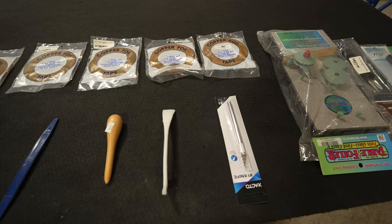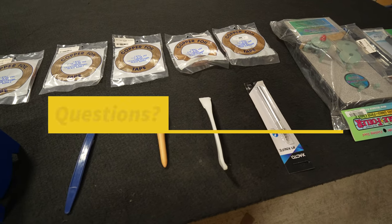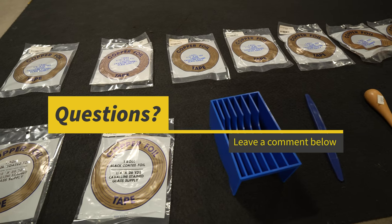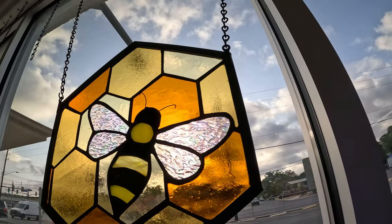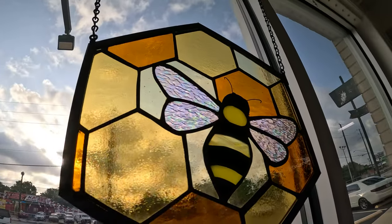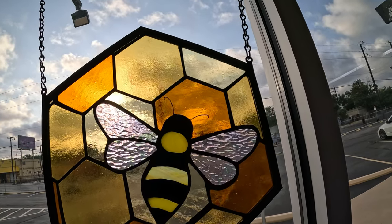So that's essentially how to foil glass. If you have any questions, leave them down below in the comments and I'll be certain to answer them. If I left anything out, please also leave that down below. Watch out for our next video where I go through the basics on how I foiled this honeybee stained glass window. So thanks for watching.